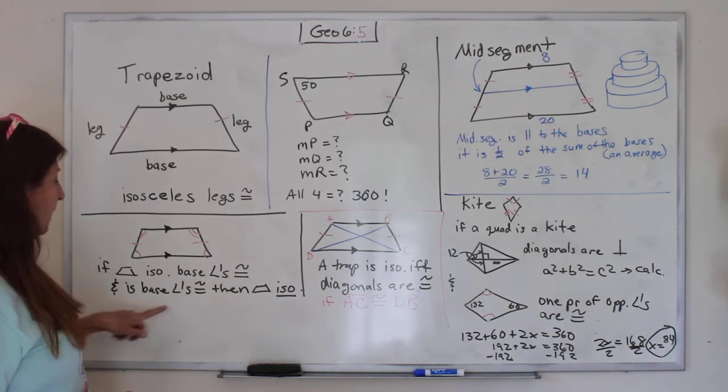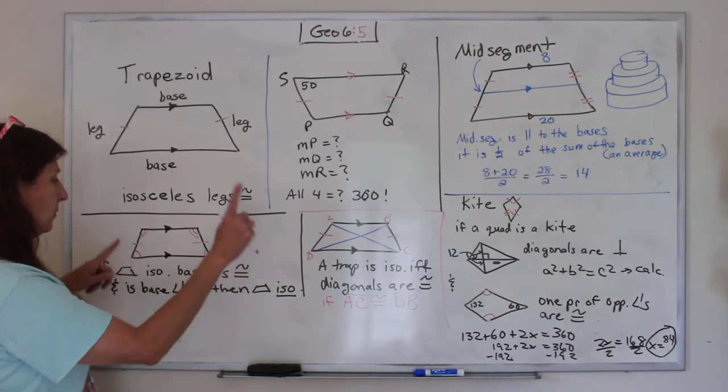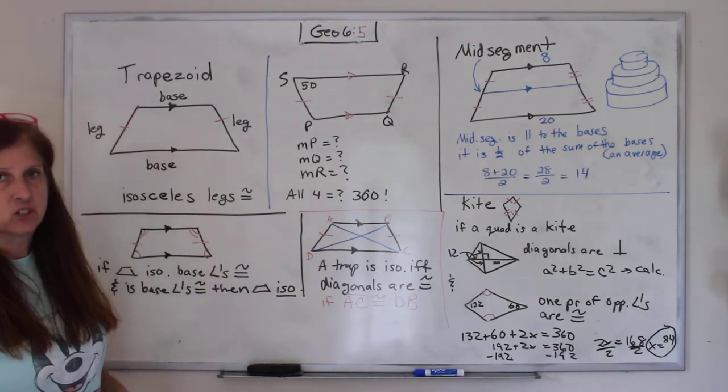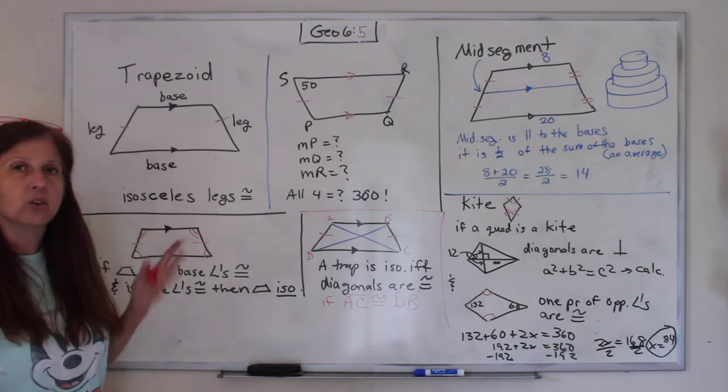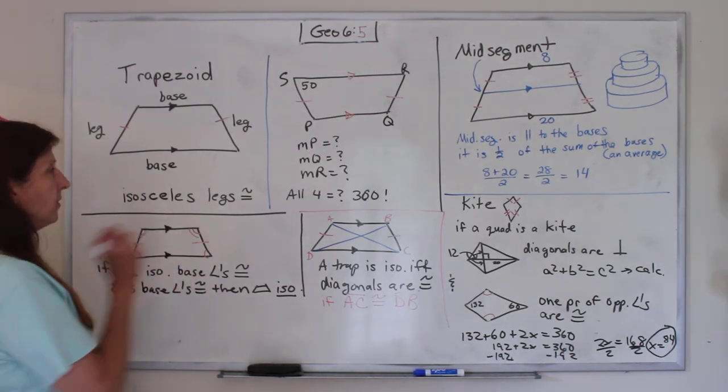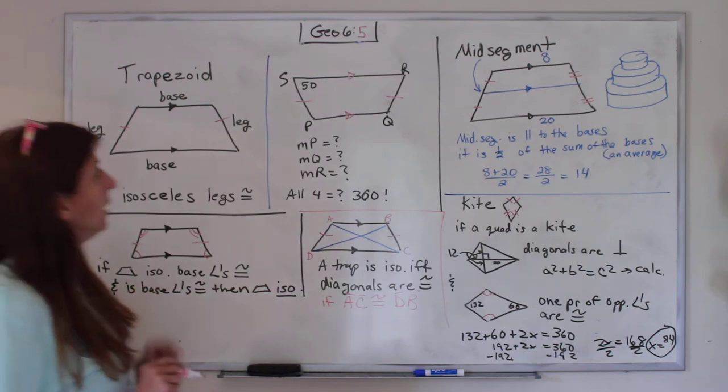Also, if the base angles are congruent, then you know it is an isosceles triangle. So if you're not sure if it's isosceles, but these angles are congruent, you know it is. Then you know that the two legs are the same.